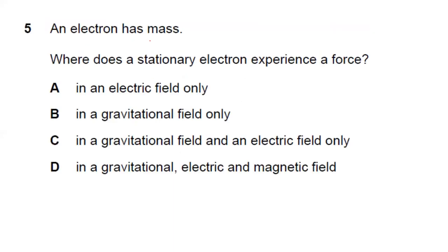Question five: an electron has mass. Where does a stationary electron experience a force? In a gravitational field — yes. In an electric field — yes. In a magnetic field — no. A magnetic field only affects moving electrons. So answer C is the right answer.